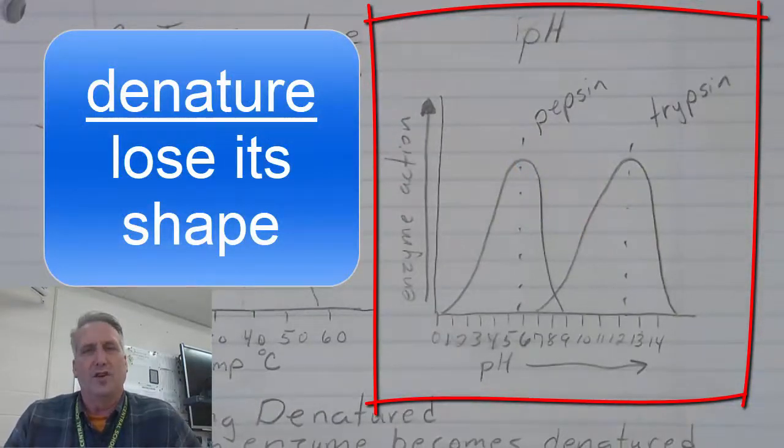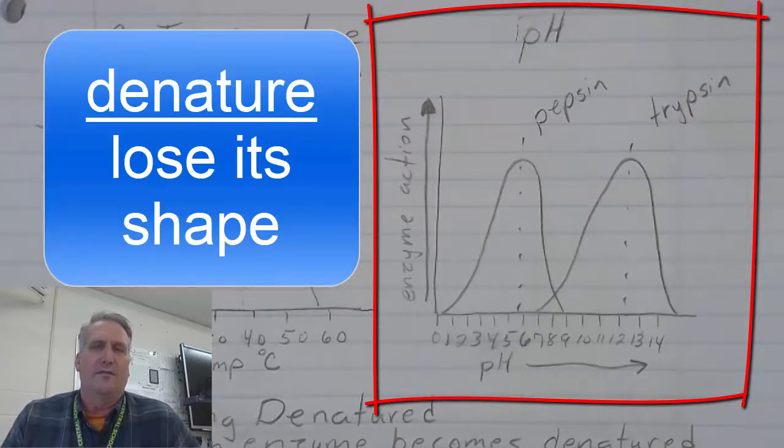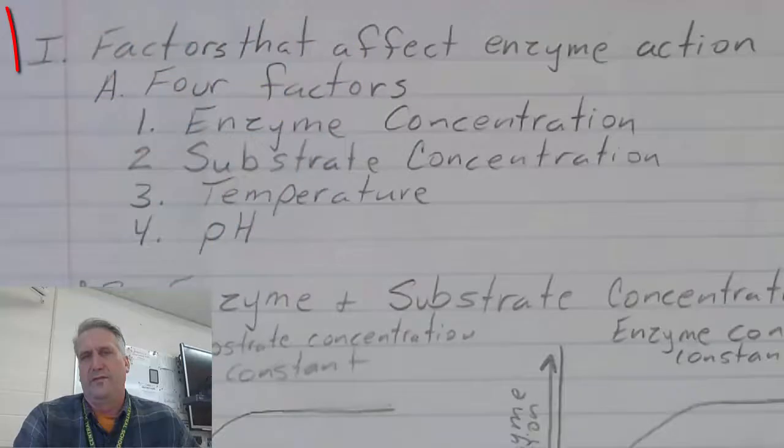This graph doesn't show the correct pH ranges for pepsin or trypsin, but it does show the correct relationship of the effect of pH on an enzyme.